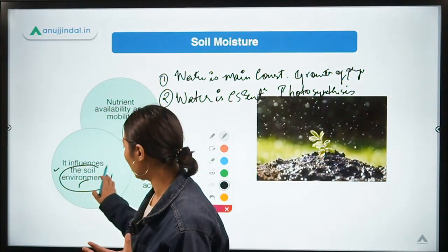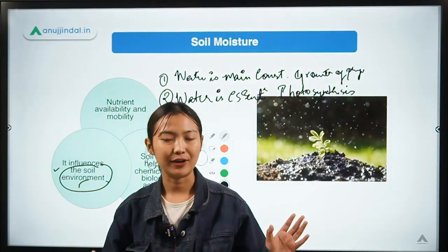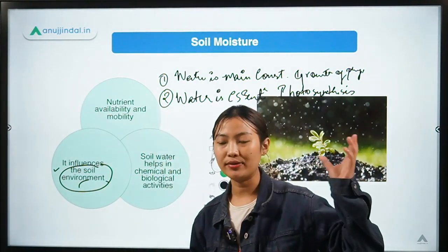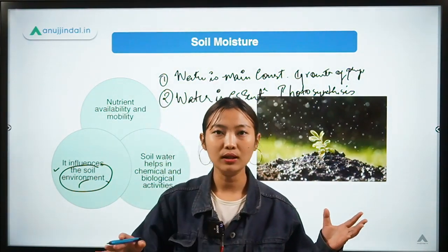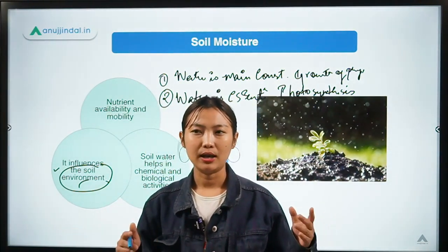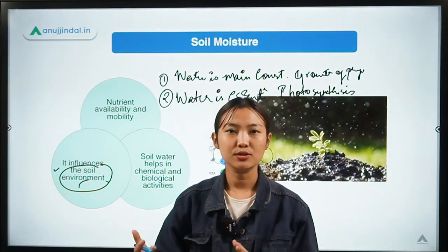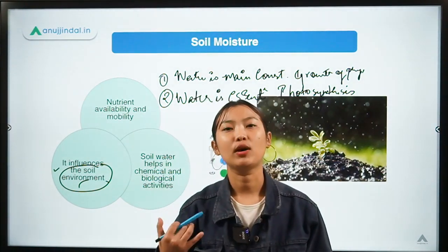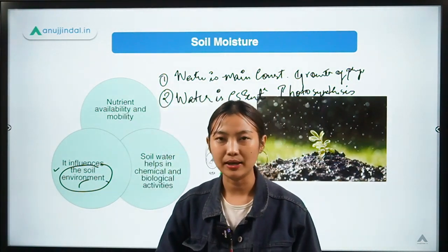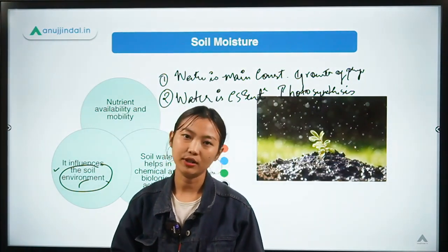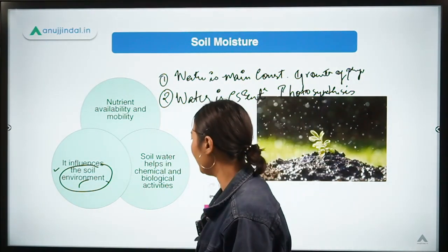Another point is the influence on the soil environment. For example, in a desert there is drought, no water, and due to that the nutrient availability and the water holding capacity of the soil is completely poor. But the presence of soil moisture can drastically change the whole environment of that soil and thereby have a positive effect on crop production.